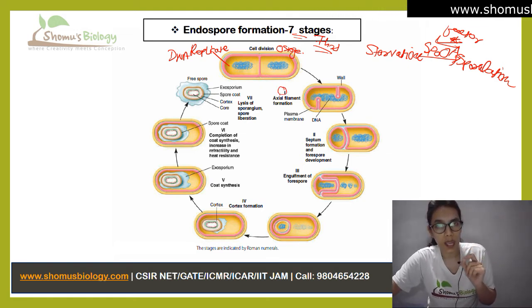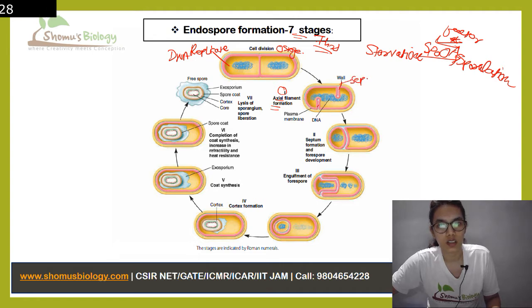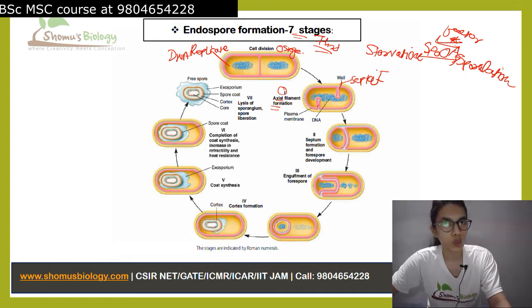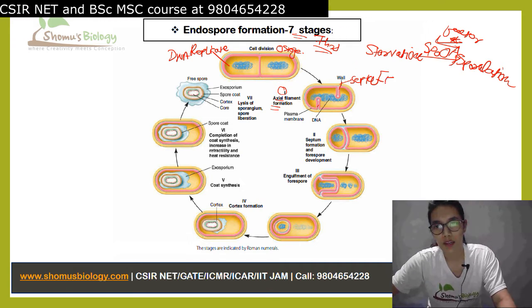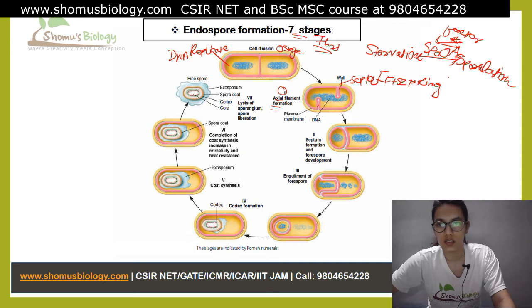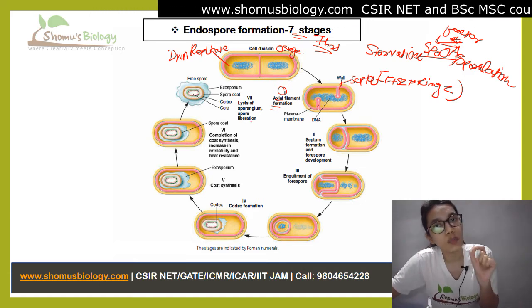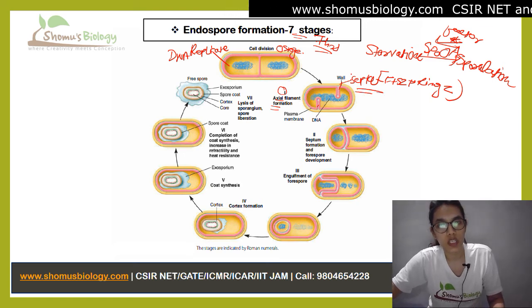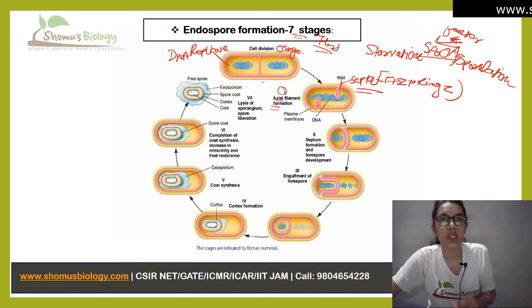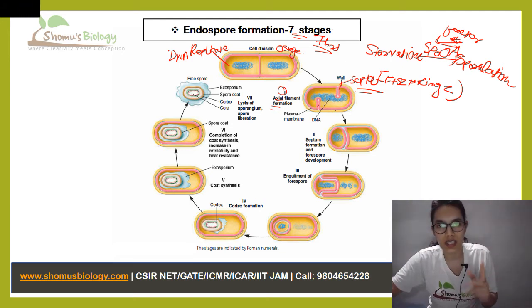In the very first stage, axial filament formation is going to happen. The septa are formed with the help of different proteins and factors, particularly FtsZ, which helps in the formation of the Z ring. Both sides of the cell have this septa occurring. In normal cell division, this cytoplasmic protein forms the septum exactly in the middle, but in endospore formation, two septa form at both end sides.